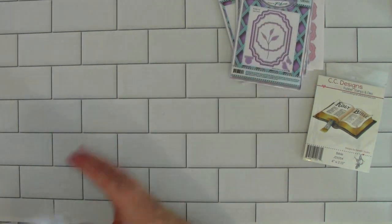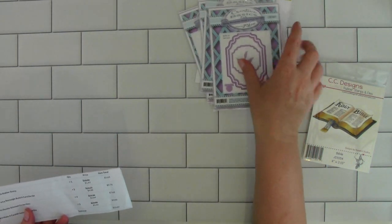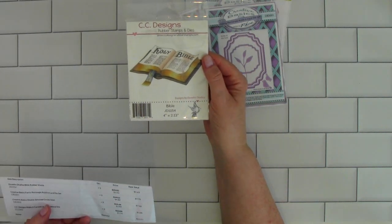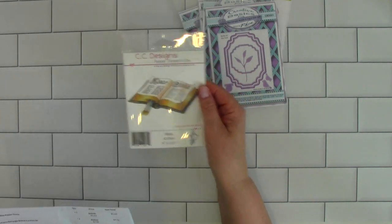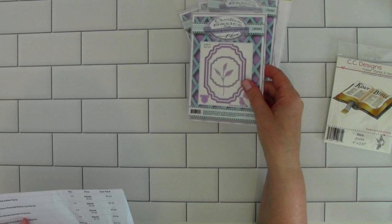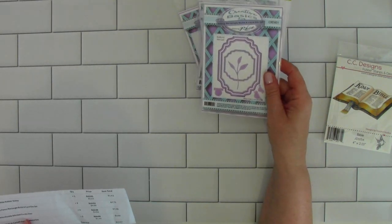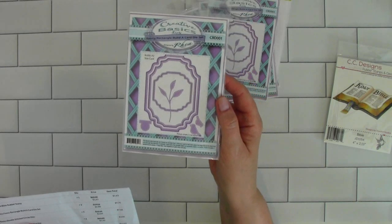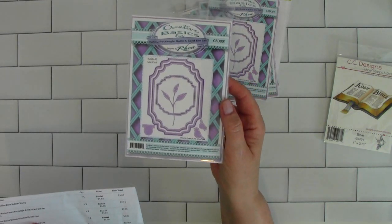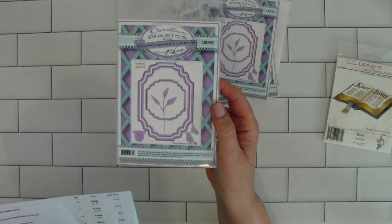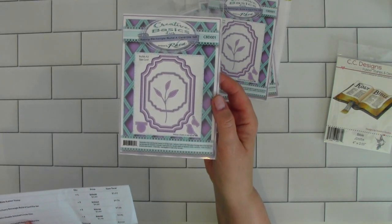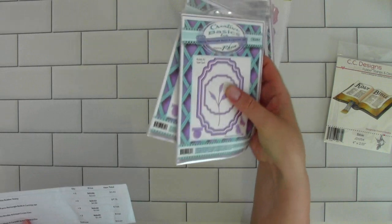Let me tell you the prices. This stamp was normally $10 and I picked it up for $1.63. The fancy rectangles were normally $15.52 each and they're on sale for $4.88, so I picked up two of them for under $10.